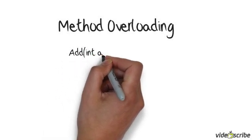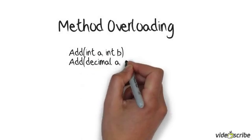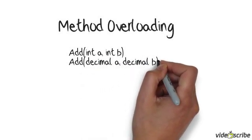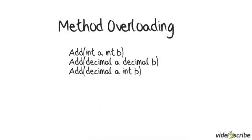add decimal a decimal b, add decimal a int b. All of them share a common name called add and just have different signatures. Each one of them has different implementation.